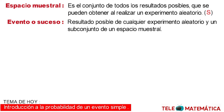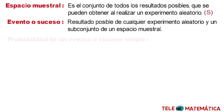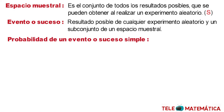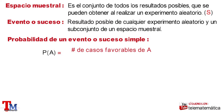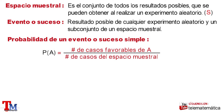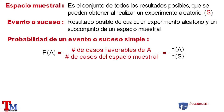Now, next we will introduce the probability of an event or simple event, which is given by the following formula. The probability of event A is equal to the number of favorable cases of A divided by the number of cases of the sample space — in abbreviation, N(A) divided by N(S), where N represents the number of cases.